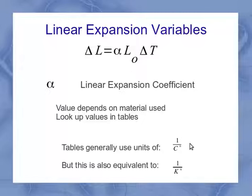When we're doing this, we realize that the units we're going to have here are 1 over degrees Celsius, because most of the tables represent it that way. But 1 over degrees Celsius is the same as 1 over degrees Kelvin when we're talking about a temperature change.